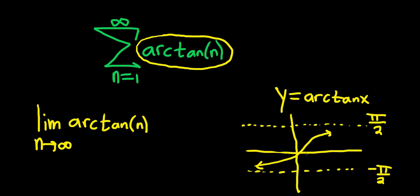So you see that as n goes to infinity, or in this case x, the y value gets closer and closer to pi over 2. So the limit here is equal to pi over 2.